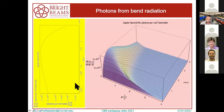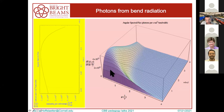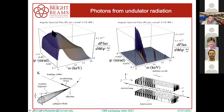Looking at the radiation pattern as a function of photon energy and angle: for a bend, most radiation goes forward and the spectral shape matches what was shown earlier; at larger angles, the peak photon energy goes down. For an undulator, the same angular dependence is present but the spectrum is very narrow — the narrow peak shifts to lower energy at larger opening angles.